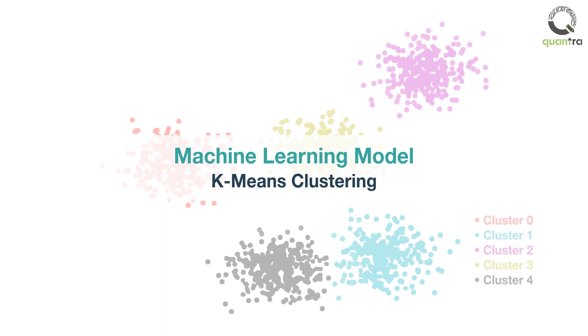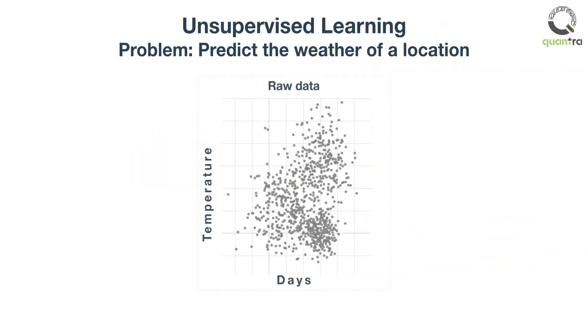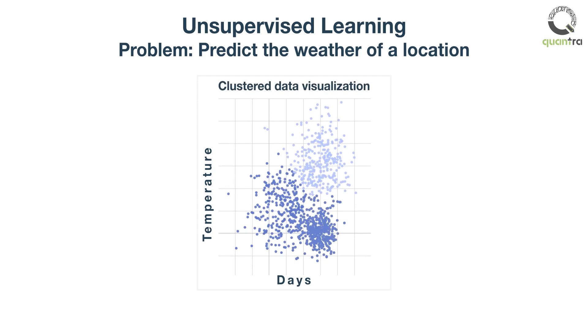In unsupervised learning algorithms, we let the algo automatically detect certain patterns in the data without manually labeling them. For instance, assume that you want the algo to predict the weather of a location. Using the historical data, the algo will learn to assign the data to clusters, say sunny, rainy and can predict the future data accordingly.